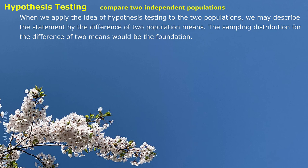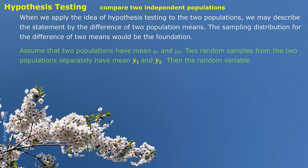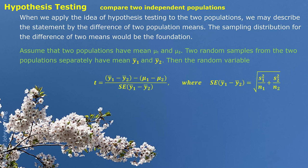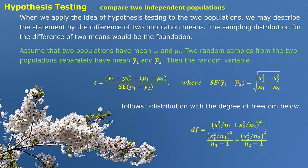The sampling distribution for the difference of two means would be the foundation. Assume that two populations have mean mu1 and mu2. Two random samples from the two populations separately have mean y1-bar and y2-bar. Then the random variable t will follow a t-distribution. We have the standard error expressed by population mean and sample mean, and also the degree of freedom. It looks quite complicated, but you can see if you apply all the information in Excel, you can easily have this degree of freedom calculated in Excel.